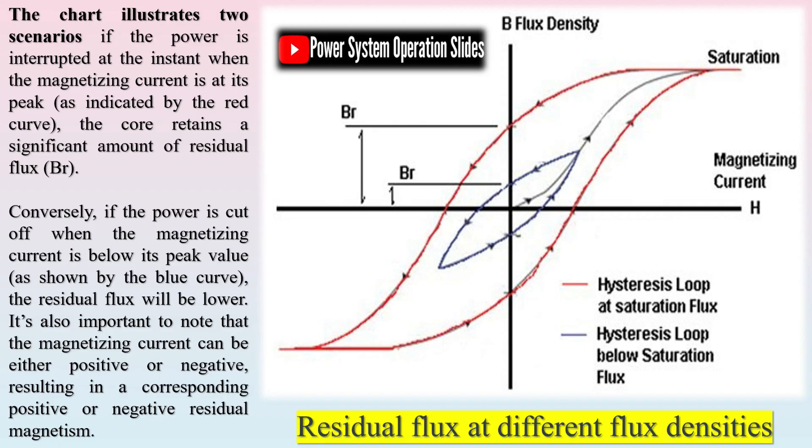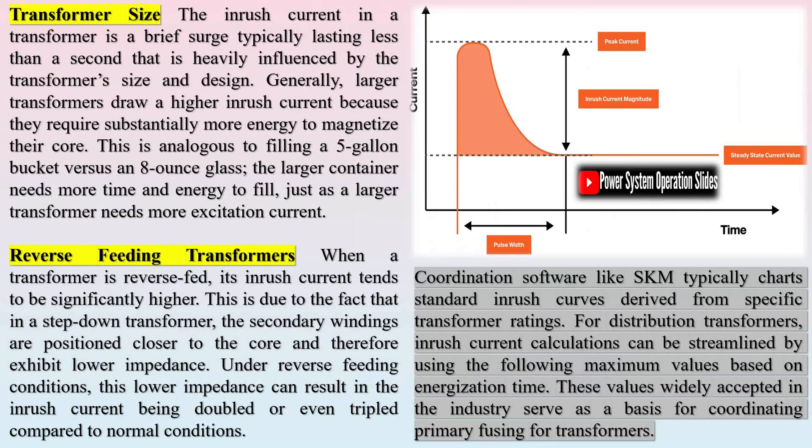Once the core is fully energized, a smaller excitation current continues to maintain the magnetic field, with any excess being seen as no-load losses.